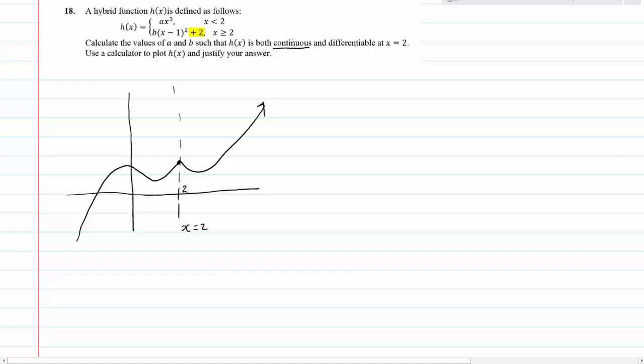What it clearly doesn't fulfill is a differentiable requirement because if we took both the gradient functions here you would see that the first gradient leading up to here is positive and then the gradient leading away in the quadratic is negative. And it's an instant change because it makes a sharp corner.